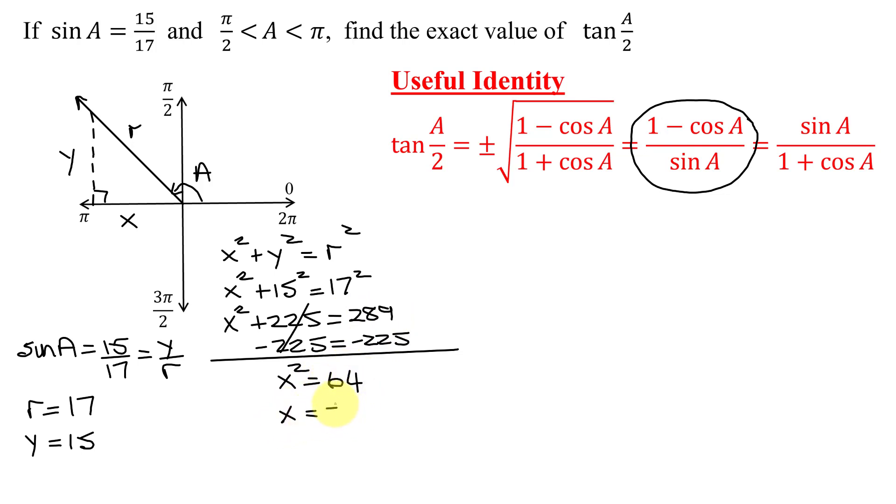So x equals plus or minus the square root of 64, which is plus or minus 8. But we're in quadrant 2. What value is x? Is it positive or negative in quadrant 2? Since we go to the left of the y-axis, we know x is going to be negative.